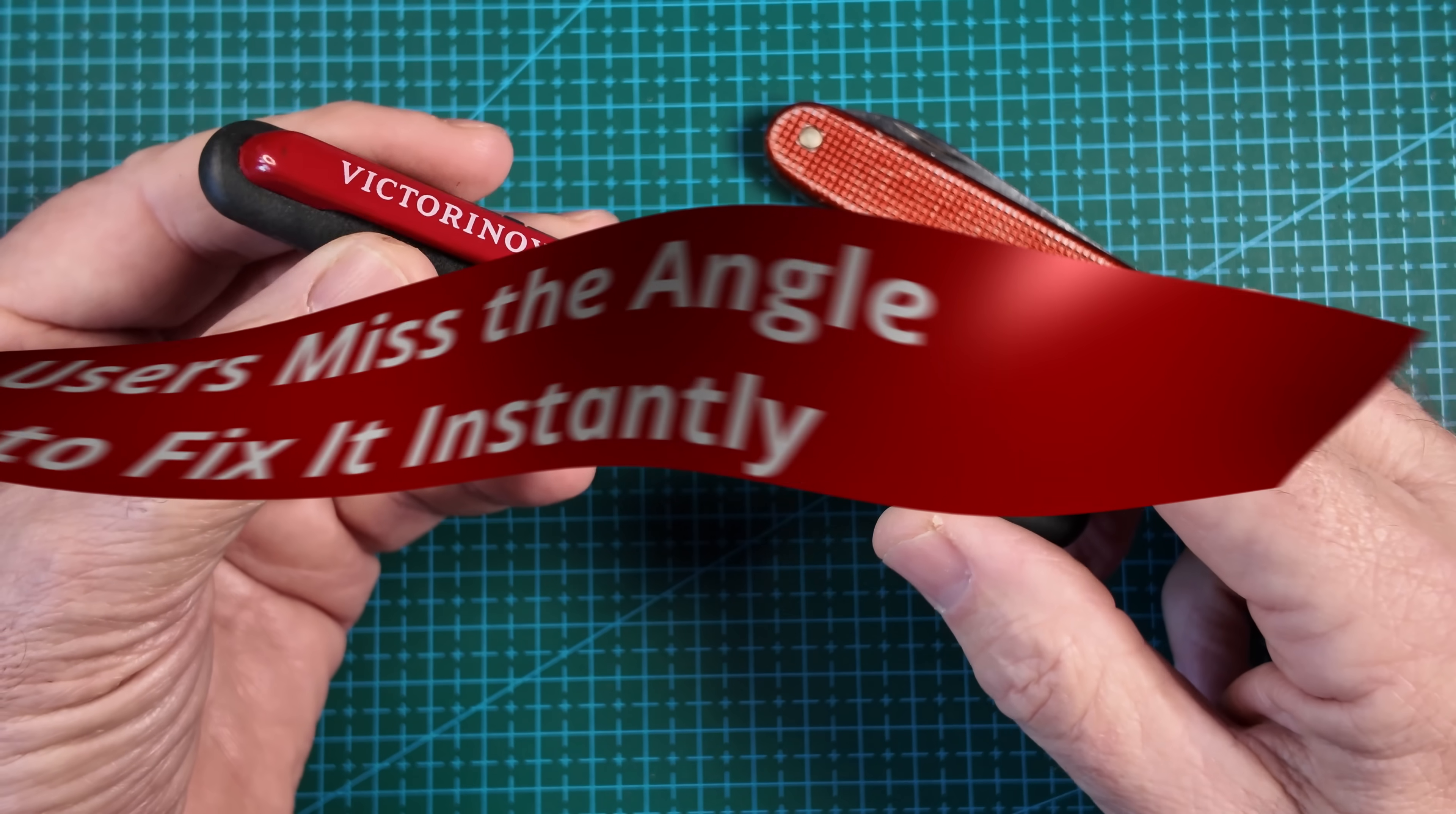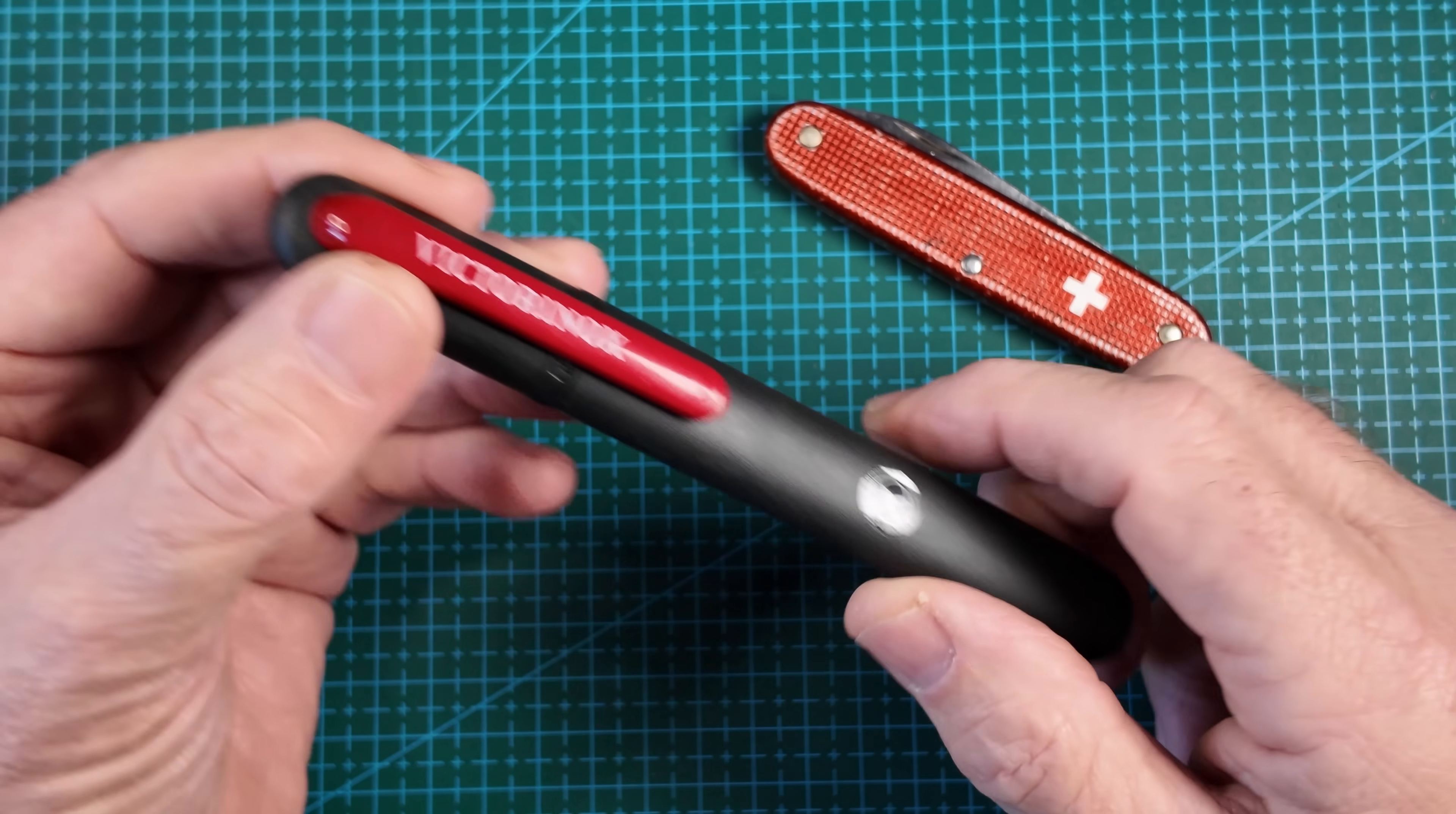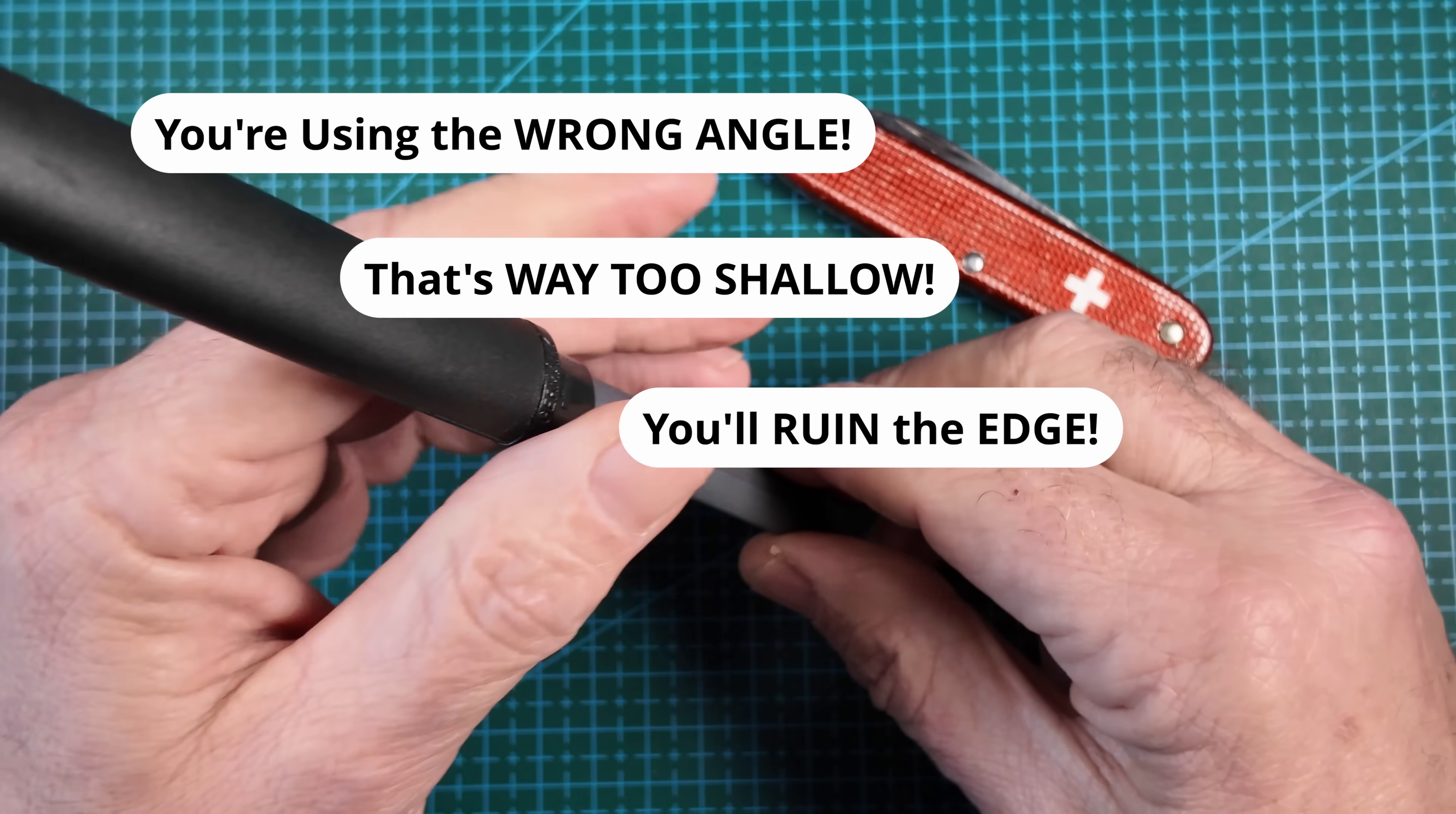Why most knife users miss the angle and how to fix it instantly. I posted a short on the Victorinox Dual Knife Sharpener recently, and my comments section absolutely exploded. So many of you were saying the same thing: you're using the wrong angle, that's way too shallow, you'll ruin the edge.